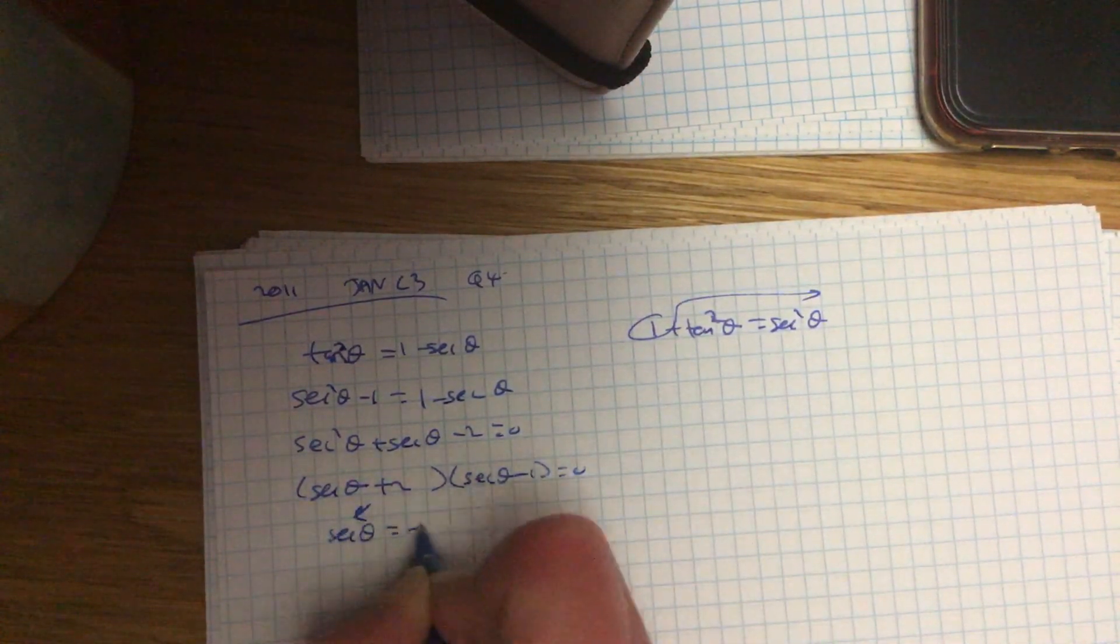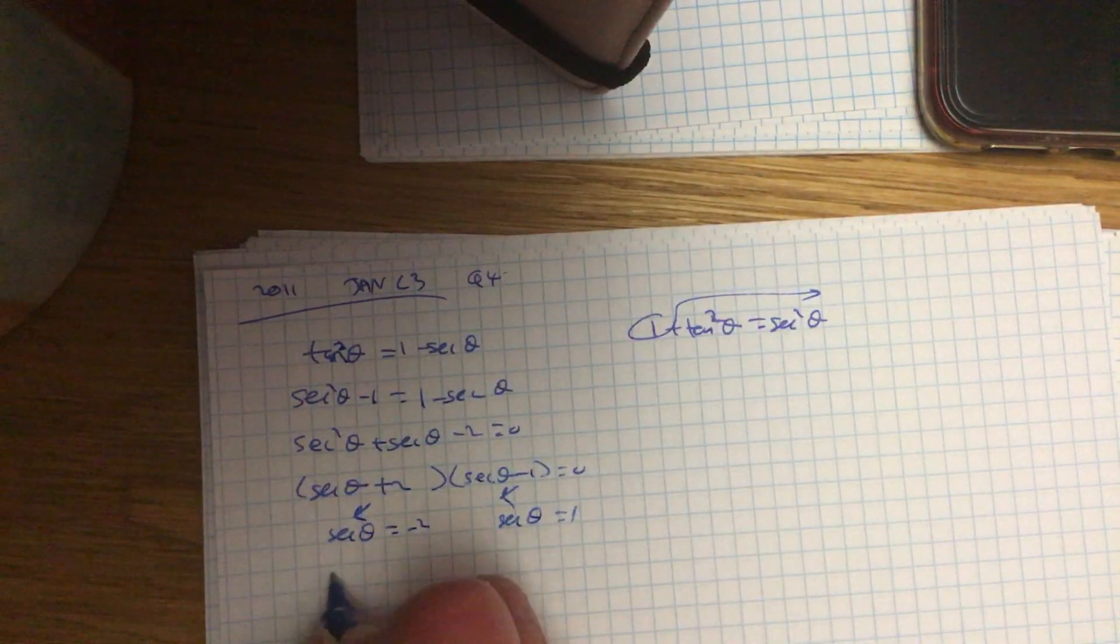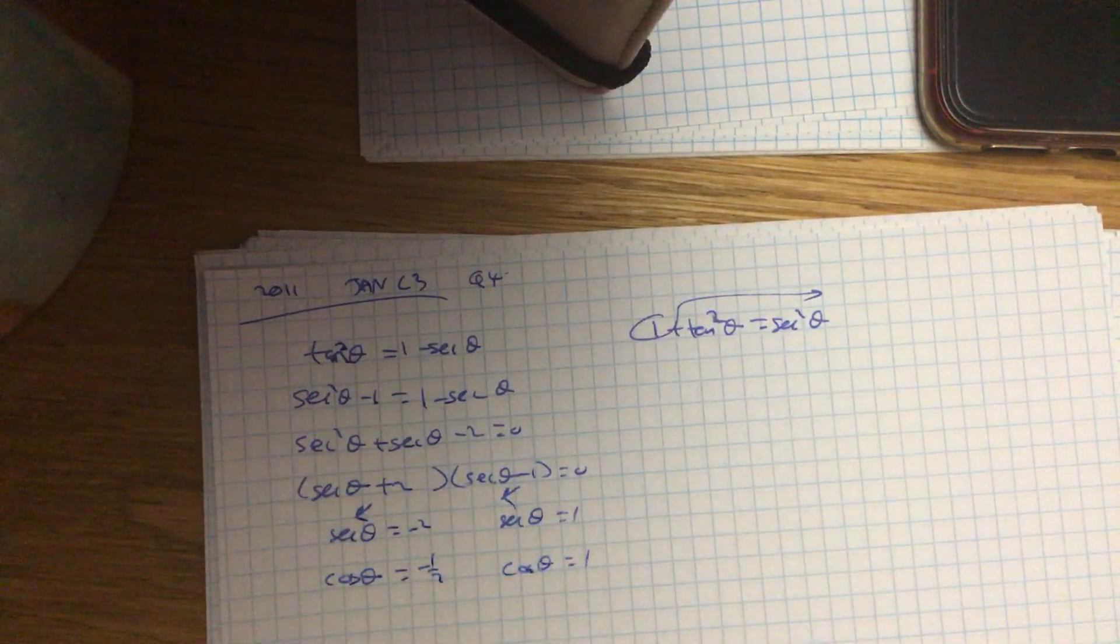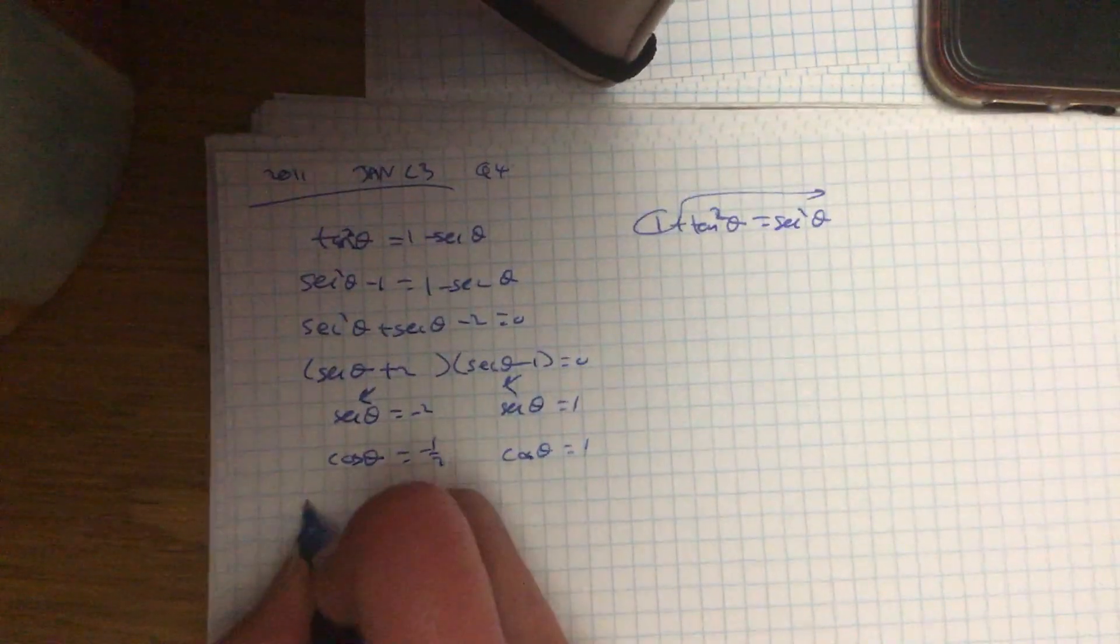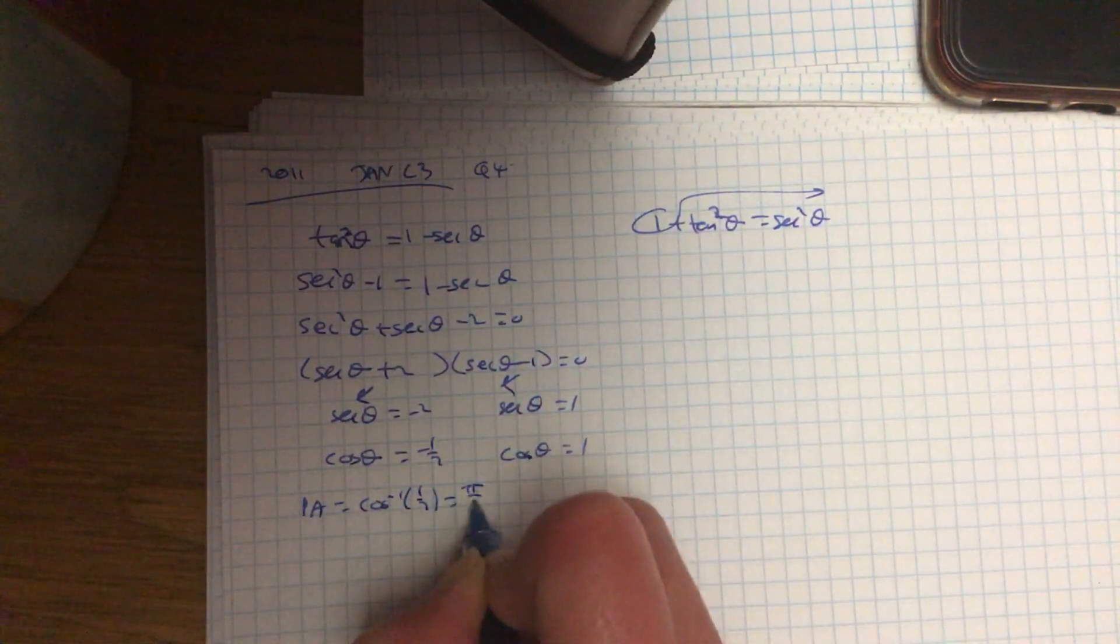sec theta equals minus 2, sec theta equals 1. Remember sec is 1 over cos, so you just turn that upside down to get it in workable form. Principal angle is inverse cos 1 half, which is pi over 3.